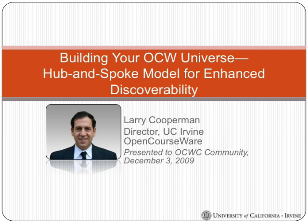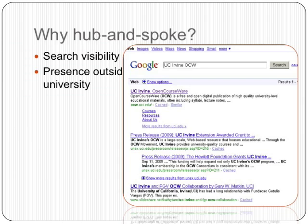And it doesn't matter whether you're MIT or a regional university in Latin America. The benefits of higher visibility cut across all universities. So what we're going to do is show you what we've been able to achieve by essentially having a series of sites that link back to our UCI website in the middle. The UCI website is the hub of a wheel, and the spokes, like on a bicycle wheel, are all of the different other websites that we use and coordinate with.